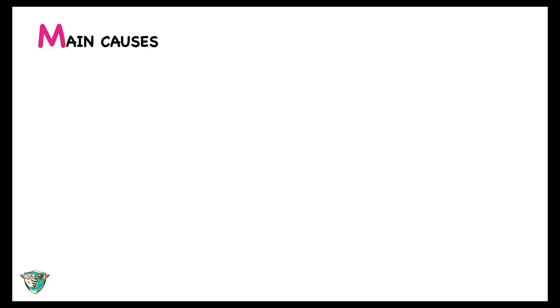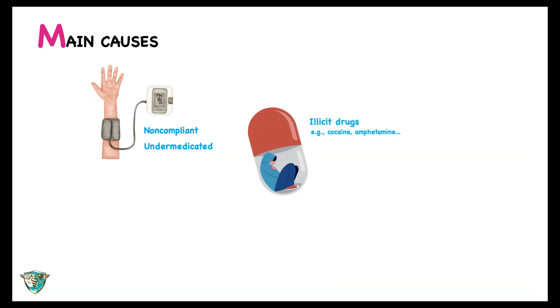Possible main causes of hypertensive crisis include patients with hypertension who are non-compliant with their prescribed medication or under-medicated. Additionally, individuals who use substances such as cocaine, crack, amphetamines, phencyclidine (PCP), and lysergic acid diethylamide (LSD) may experience hypertensive crises. Another potential cause is patients taking monoamine oxidase inhibitors who consume tyramine-rich foods.